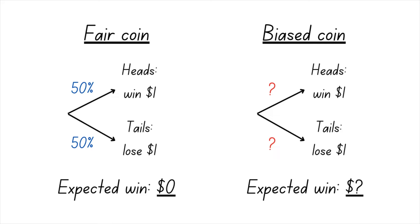What if you play the same game with a biased coin without knowing the probabilities of heads and tails? Now the probabilities associated with the two possible outcomes are unknown, and you are in the dark about the degree of risk you'd be bearing if you played the game with such a coin. This is an example of an ambiguous event.